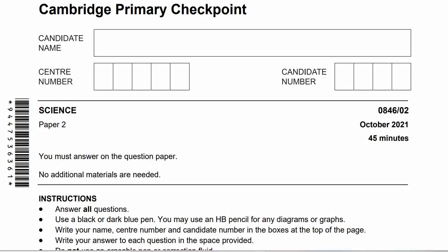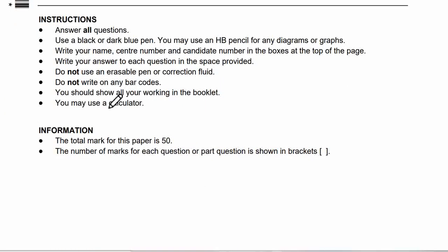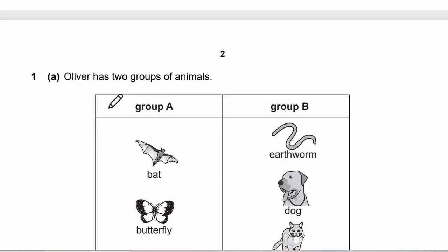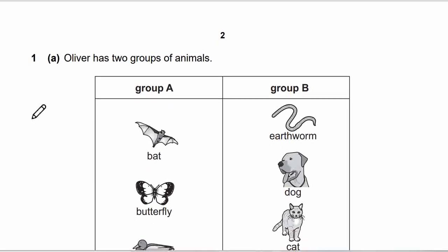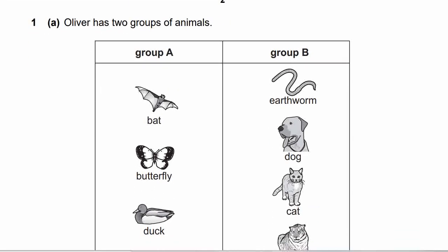Hi guys, today we are going to discuss Cambridge Primary Checkpoint Science Paper 2, paper code 0846/02, from October 2021, for 45 minutes. Let's get started from question number one. We'll scroll over the question so you may take a screenshot if you open this through your computer, pause the video and use it for practice.